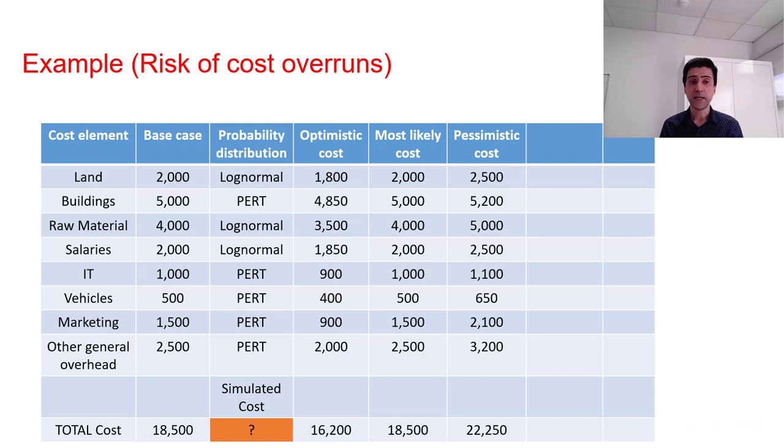For other cost centers, such as buildings, a PERT distribution has been used. And we understand that based on the static or non-stochastic calculations, the base cost of the project is 18,500. But we want to combine those costs under different statistical distributions and find a stochastic result.